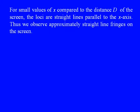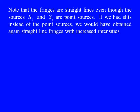The fringes are hyperbolic. For small values of x compared to the distance D of the screen from the line of sources, the loci are straight lines parallel to the x-axis. Thus we observe approximately straight-line fringes on the screen. Note that the fringes are straight lines even though the sources S1 and S2 are point sources. If we had slits instead of point sources, we would obtain straight-line fringes with increased intensities.